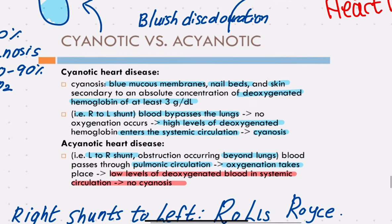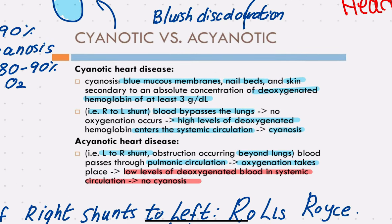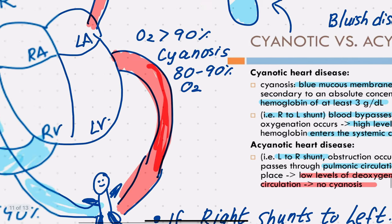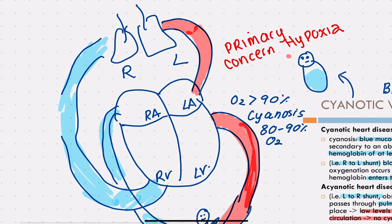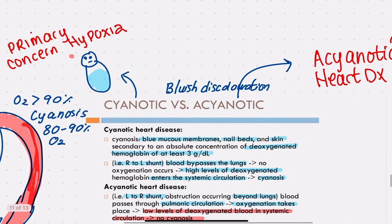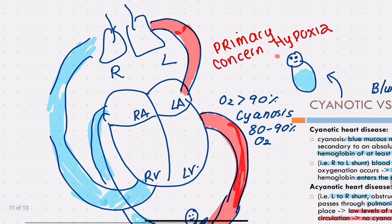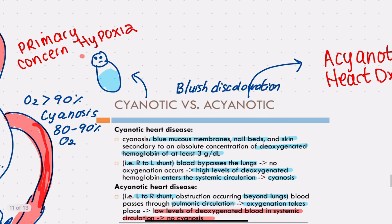Cyanotic heart disease involves blue mucous membranes, nail beds, and skin secondary to an absolute concentration of deoxygenated hemoglobin of 3 grams per deciliter. This is typically present in a right-to-left shunt. In a right-to-left shunt, instead of the blood taking the longer route to the lungs, the blood shunts from the right ventricle directly into the left ventricle.